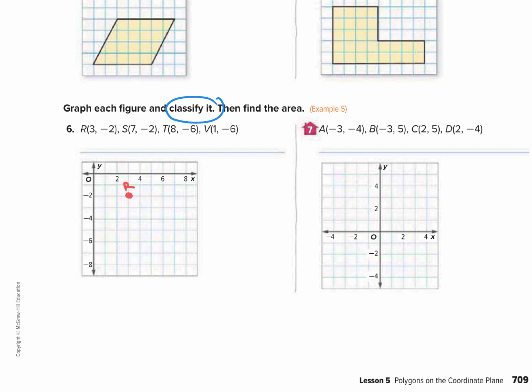Then we have (7, -2), so 7 to the right, down 2, that's point S. Then we have (8, -6), 8 to the right, down 6, that is point T. Then we have (1, -6), 1 to the right, down 6, point V. So if I connect these, we have a trapezoid. Now that we have a trapezoid, we have to use the formula for a trapezoid: base 1 plus base 2, times the height, divided by 2.